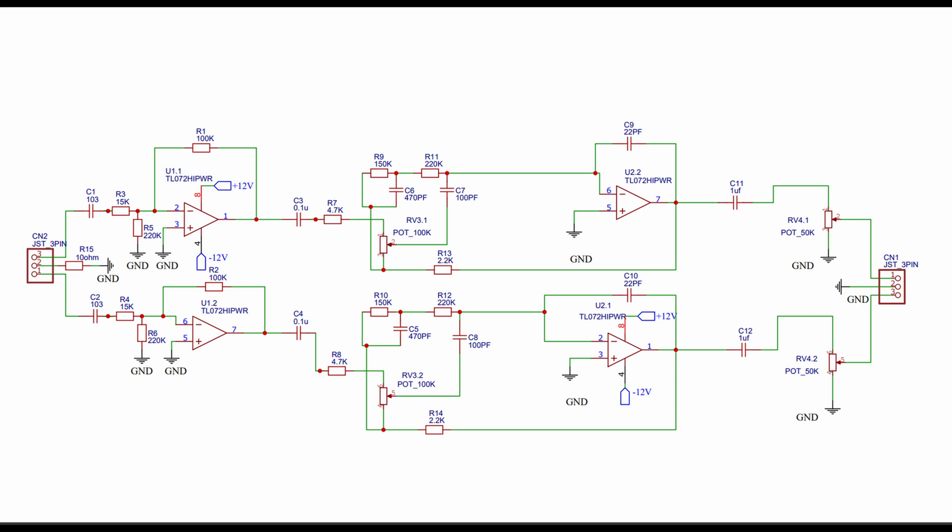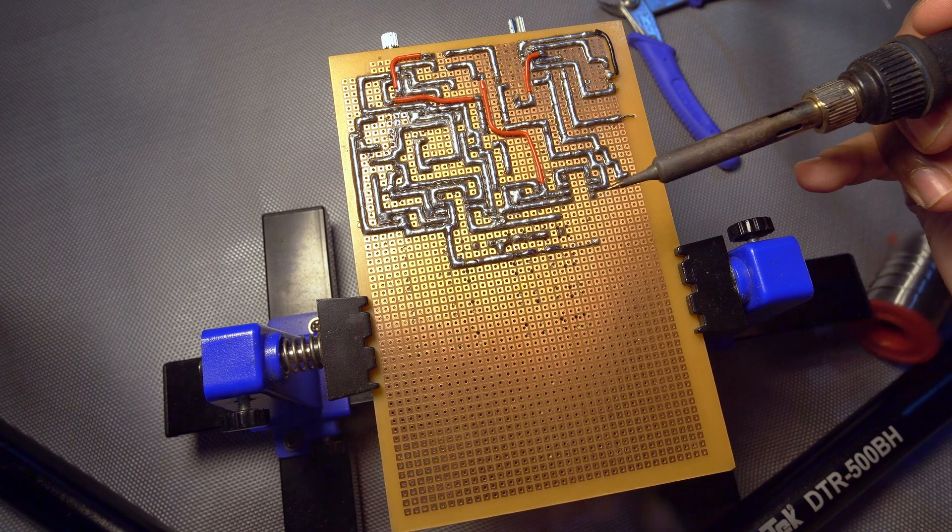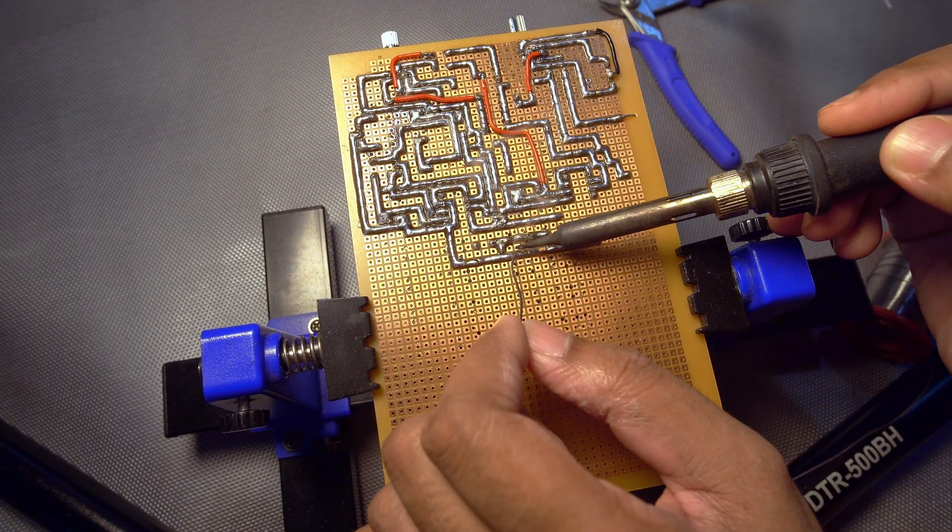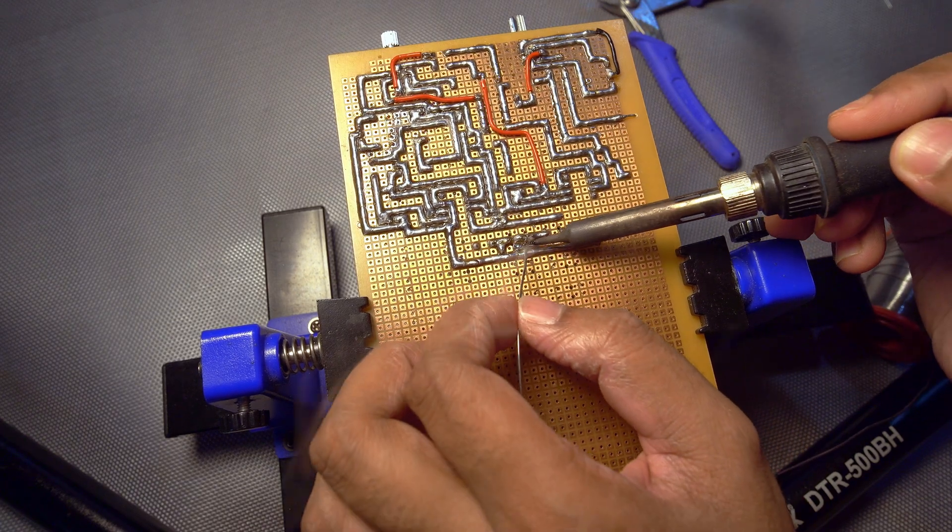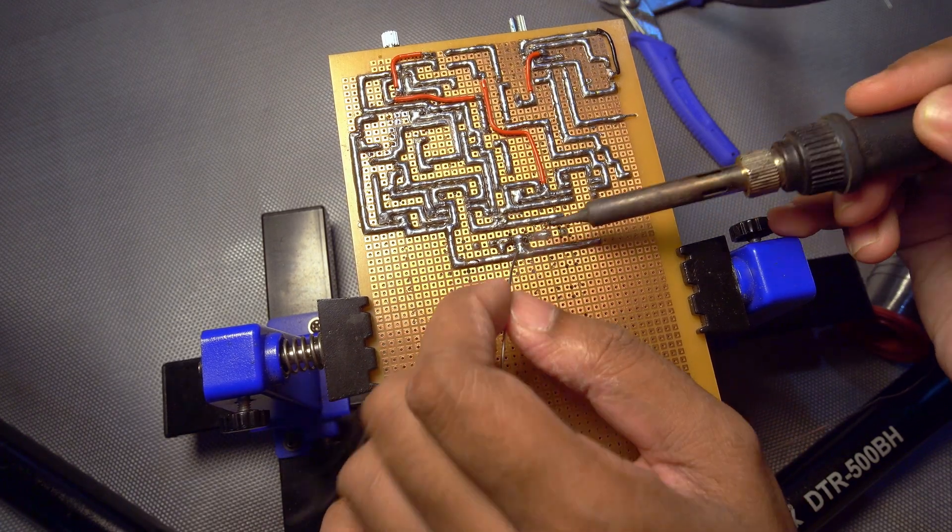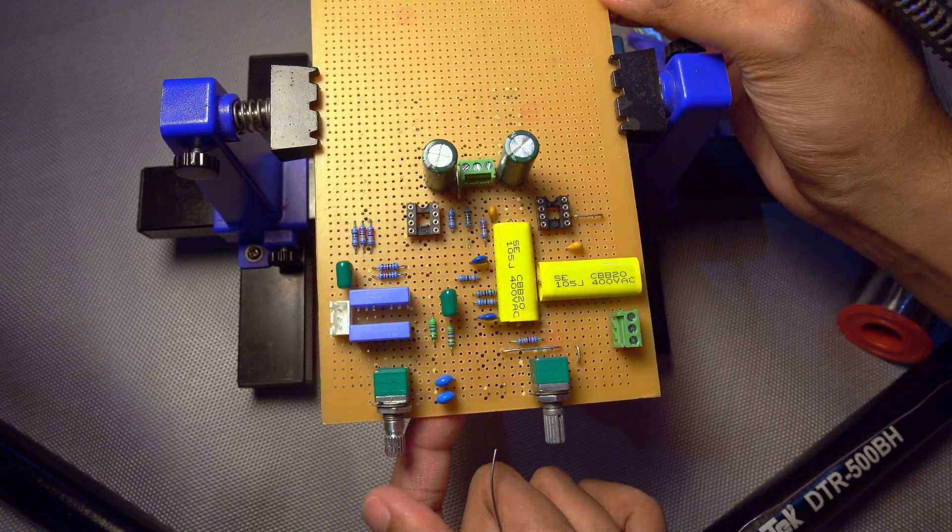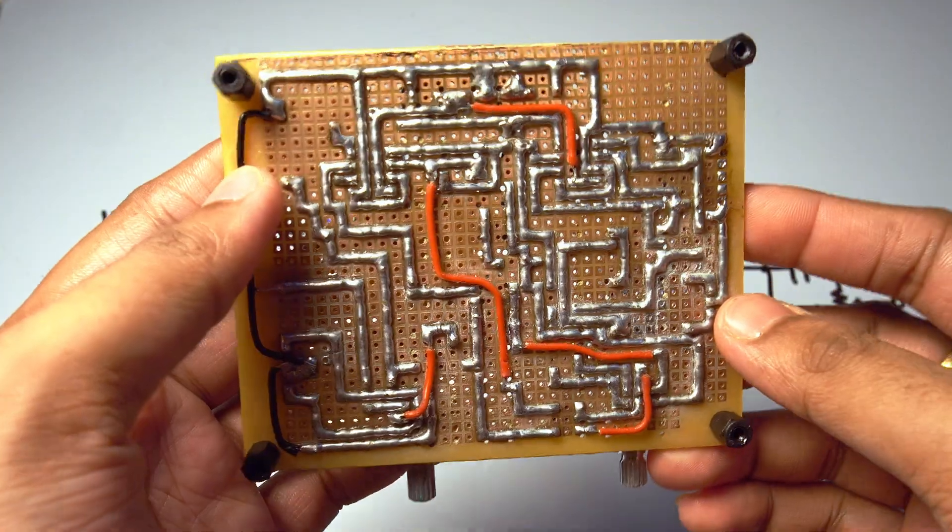The only thing remaining was to gather around the components and start soldering. After about five to six hours of soldering, the finished output looks like this. It's kind of a big circuit and it took a lot of headache to complete it, but now we will test it.